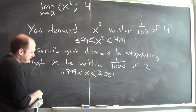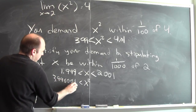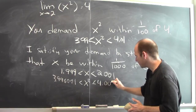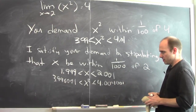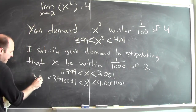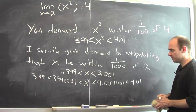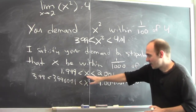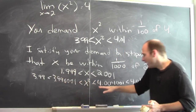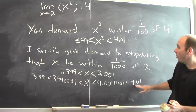And if x is bigger than 1.999, then x squared is bigger than 3.996001. Now look at these numbers: 3.996001 is bigger than 3.99, and 4.004001 is smaller than 4.01. So if x is within a thousandth of 2 — meaning x is between 1.999 and 2.001 — then x squared is between 3.996001 and 4.004001, which means x squared is between 3.99 and 4.01, which is exactly what you demanded.